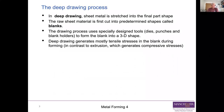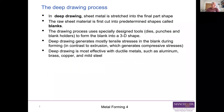Deep drawing mostly generates tensile stresses in the blank during forming — in other words, you're stretching it. That's in contrast to extrusion, which tends to generate compressive stresses. It's much easiest to deep draw if your metal is very ductile — it can take an awful lot of strain before it fails. Aluminium, brass, copper, and mild steel are typical metals that we can deep draw. A drinks can will often be either aluminium or mild steel, and the relative economics of using those two materials vary from time to time.